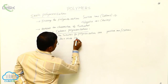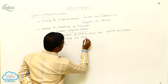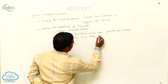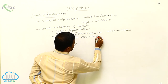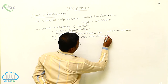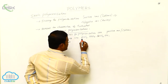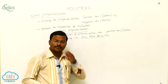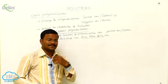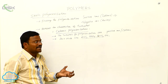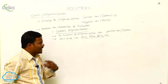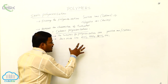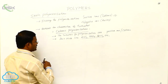Examples of Lewis acid initiators include AlCl₃, SbF₅, SnCl₂, etc. From first-year chemistry, we know that chemical substances which readily accept electron pairs are called Lewis acids. In the presence of Lewis acids, cationic polymerization takes place.